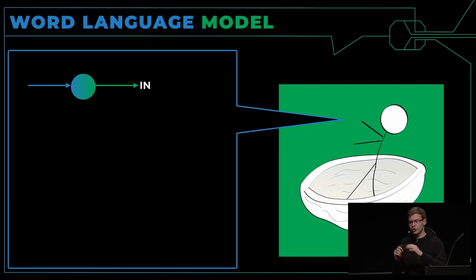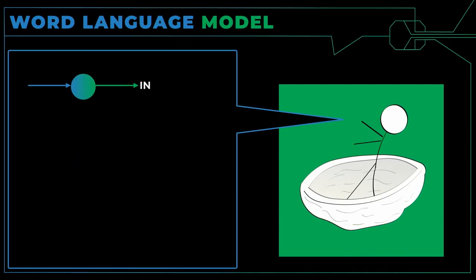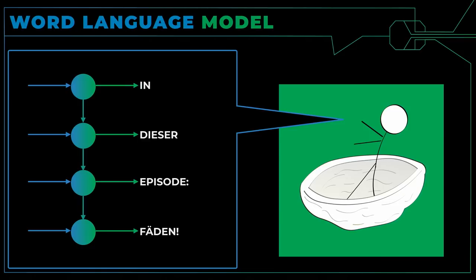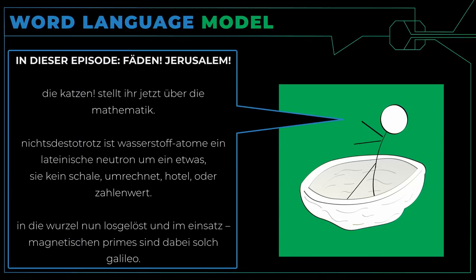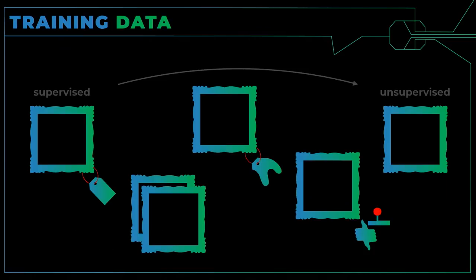Jetzt zeige ich euch etwas über Texte. Ich möchte Sätze für meinen Podcast generieren. Ich habe ein Neuron, was mir ein Wort gibt, und benutze jetzt das letzte Wort, um das nächste Wort zu generieren, sodass wir in der nächsten Iteration immer wissen, was das Wort davor war. Ich habe versucht, ein Netzwerk zu generieren, das meinen Podcast generiert — es hat nicht funktioniert. Was ich gelernt habe: ich habe nicht genug Trainingsdaten. Man braucht sehr viele Podcast-Episoden, um ein Modell so zu trainieren.